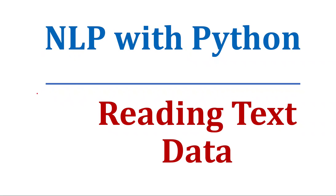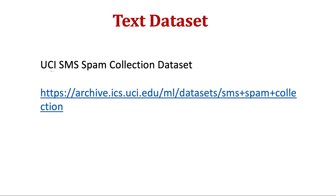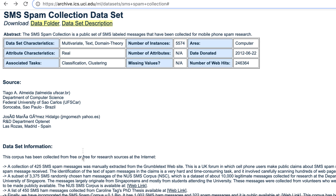Raw text data is mostly unstructured data, so in today's video we will see how to read such text data which is not structured. For that we will use a popular dataset: the UCI SMS Spam Collection dataset. I have given the link for that website, and you can also Google 'UCI SMS Spam Collection dataset' and you will find the site in the first result.